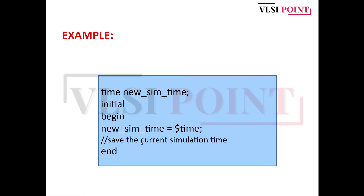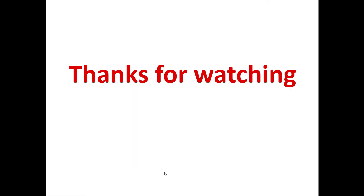Consider this example: new_sim_time is declared as a time variable, and $time is assigned to it. $time is a system function that returns the current simulation time, so the current simulation time is stored in this variable. That concludes today's lecture on register data types. If you have any doubts, leave them in the comments, and please subscribe and like the video.